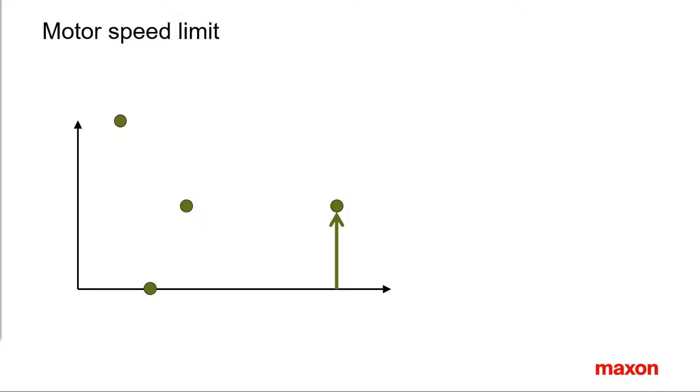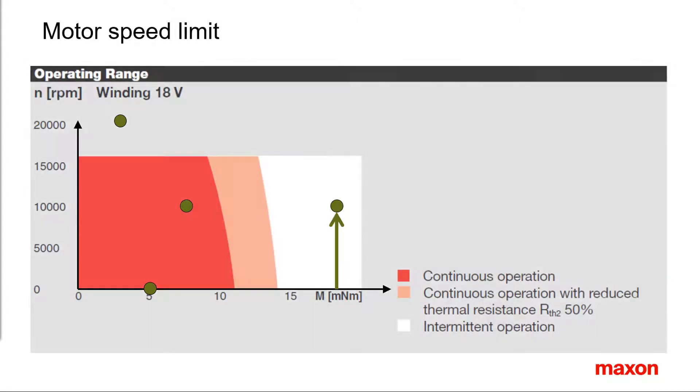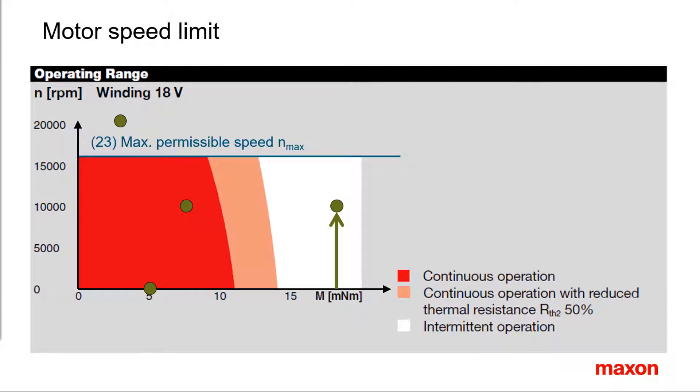We start with looking at motor speed. We need a motor with a speed limit that is high enough to cover all operating points. The maximum permissible speed corresponds to the upper limit of the operating range diagram. In our case here, the operation point with the highest speed cannot be covered.